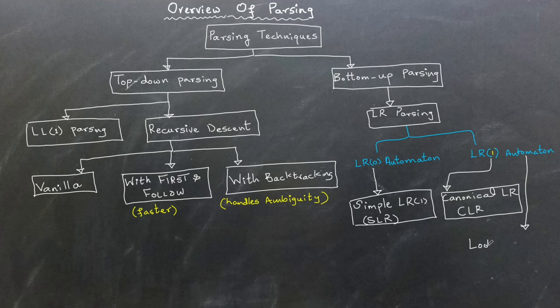The second scheme is Canonical LR parsing, a more comprehensive method that uses LR(1) automaton to handle complex grammars. Finally, we have look-ahead LR parsing, a refined version of CLR that combines states with identical cores, making it more memory efficient.